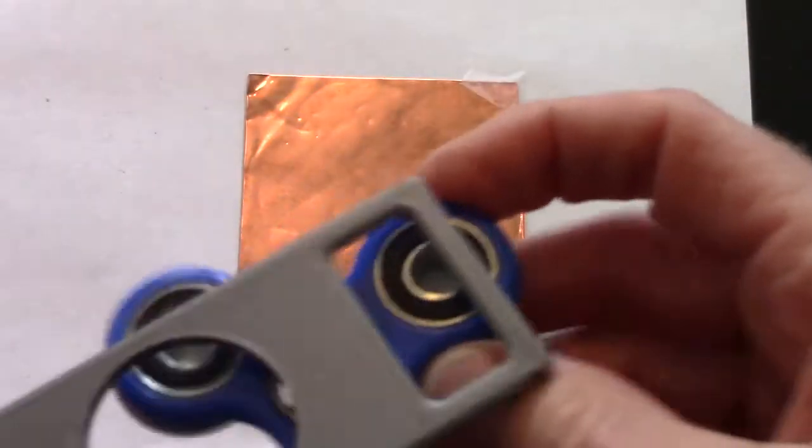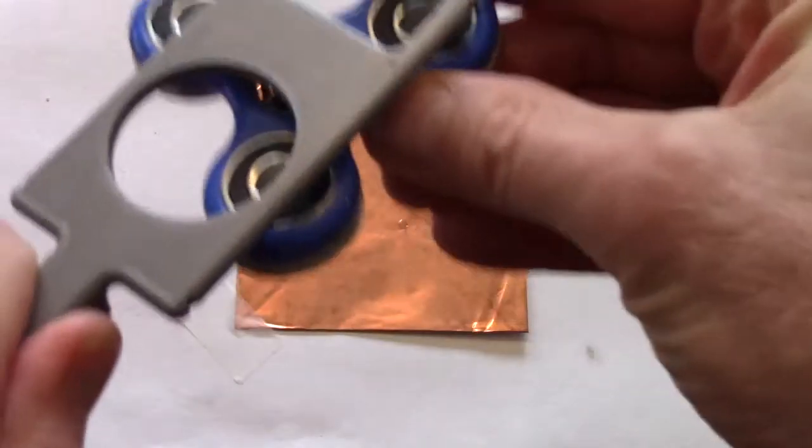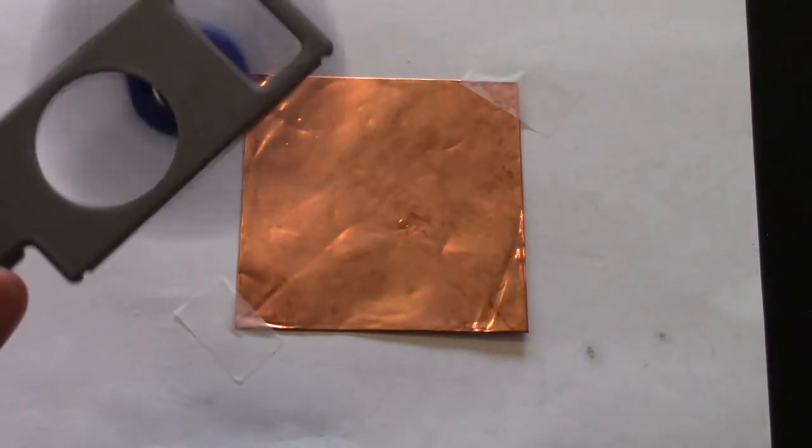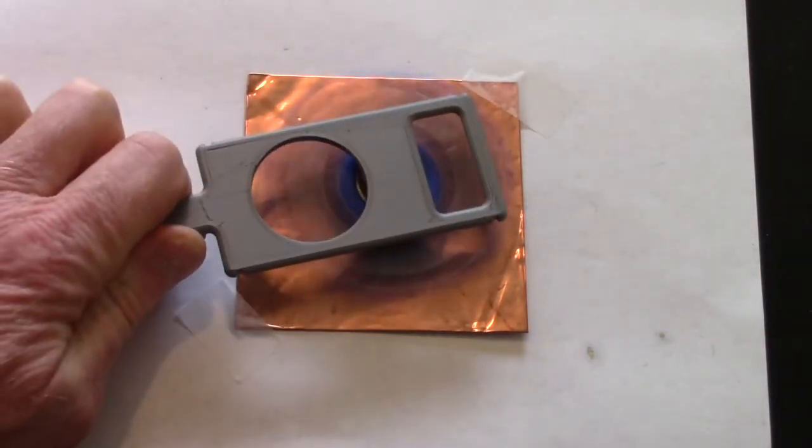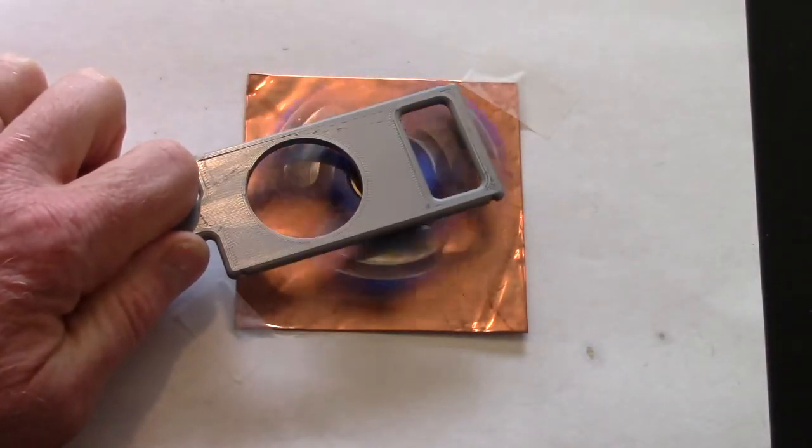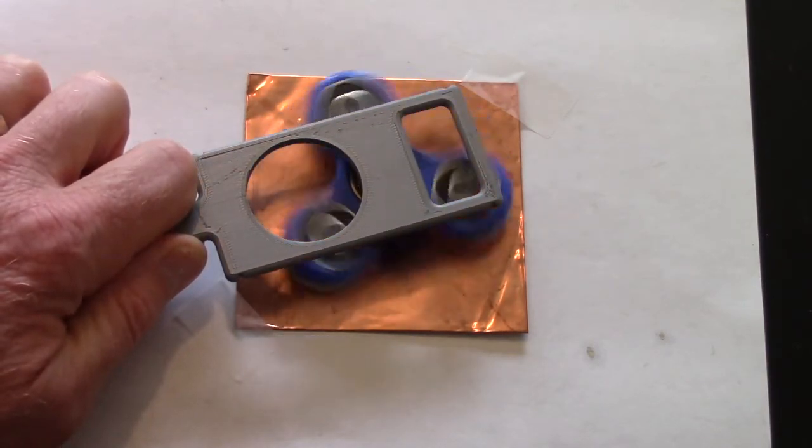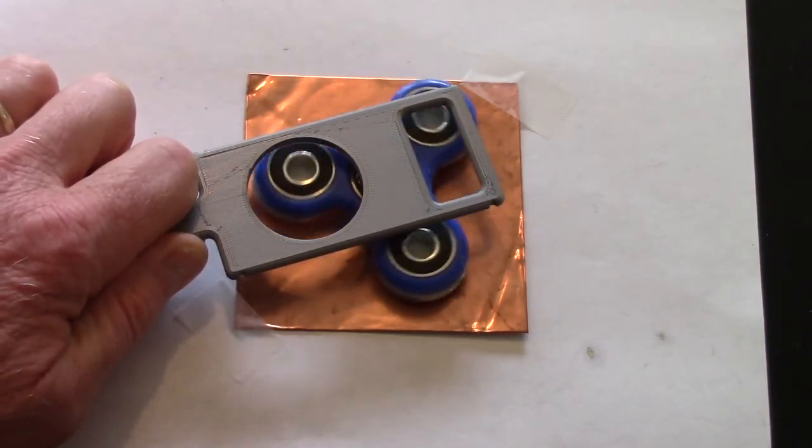So what we're seeing here is we've got the significant kinetic energy in the magnets, but when we put it near the copper, that energy is being taken away from the spinning magnets.